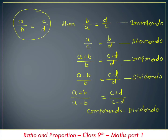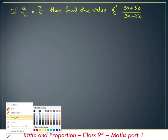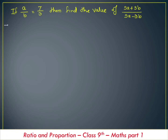So here the first question: if a divided by b is equal to 7 by 3, find the value of 5a plus 3b divided by 5a minus 3b. We are given that a divided by b is equal to 7 divided by 3.